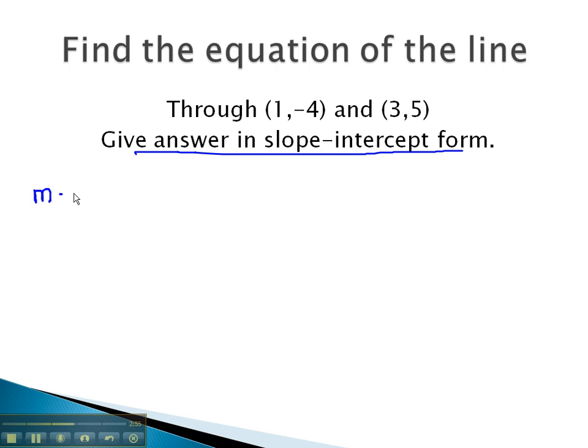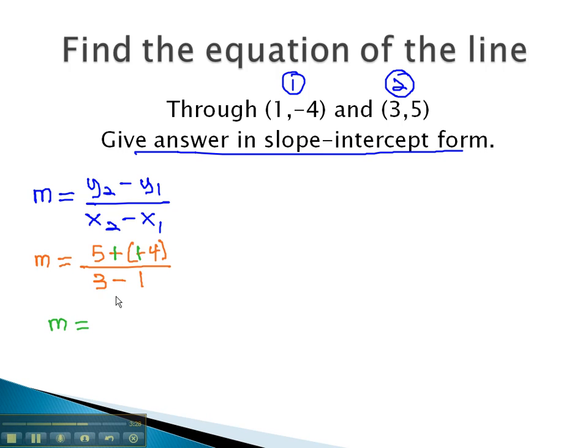To find the equation of any line, we first need to know the slope, which is found by taking y2 minus y1 over x2 minus x1. Using our first and second points, we can plug that information into the formula. y2 is 5 minus y1 is negative 4, over x2 is 3 minus x1 is 1. By subtracting, we can find our slope. Minus a negative is the same as adding, so we have 9 over 2.